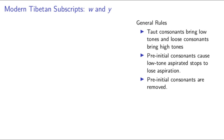Now the subscripts aren't quite so easy, but we can still make do with the general rules we've already seen. As we saw before, the glides ya, ra, wa, and la can be subscripted in Old Tibetan to denote the pronunciation of that glide between the radical consonant and the vowel. Of the four subscripts, wa is the easiest to deal with.